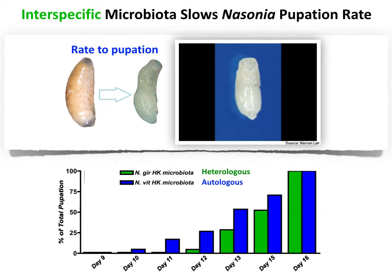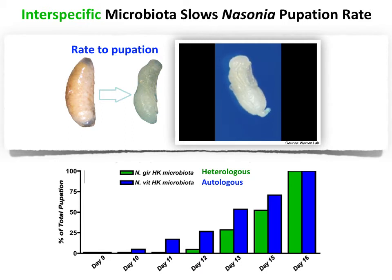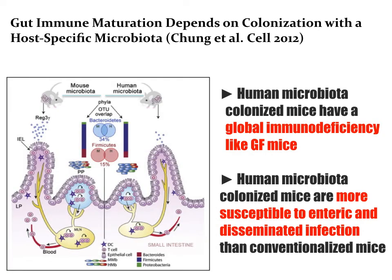Pupation rate is also affected — the interspecific or heterologous microbiota put into a Vitropenis background results in slower pupation than the intraspecific microbiota in the same genetic background. This is not uncommon; with much more widely different microbial communities, similar effects are found. For example, putting human microbiota into mice leads to a global immunodeficiency, just like germ-free mice. The human microbiome, even though it's mammalian-like, does not confer greater performance than germ-free conditions, and those mice are also more susceptible to bacterial infections.